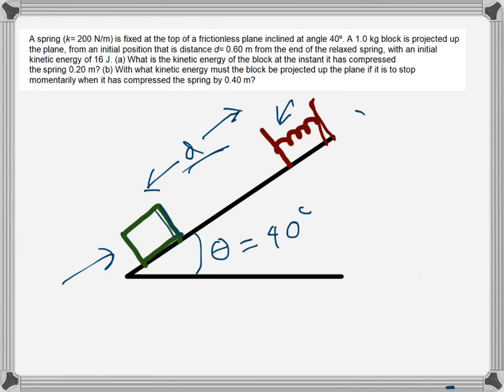The initial kinetic energy of the block at this position is 16 joules. We need to find the kinetic energy of the block at the instant it has compressed the spring 0.2 meters — so the spring is in a relaxed position when the block was here, and it is compressed 0.2 meters. What is the kinetic energy of the block?